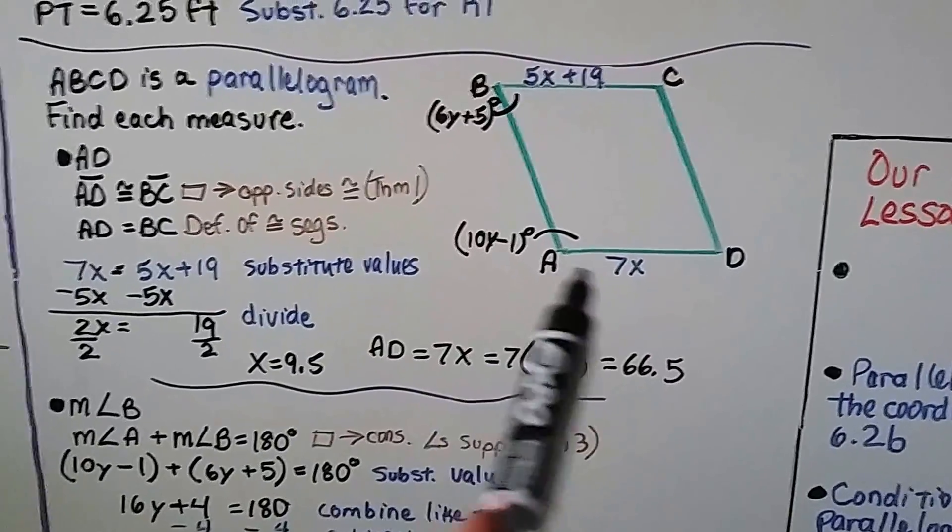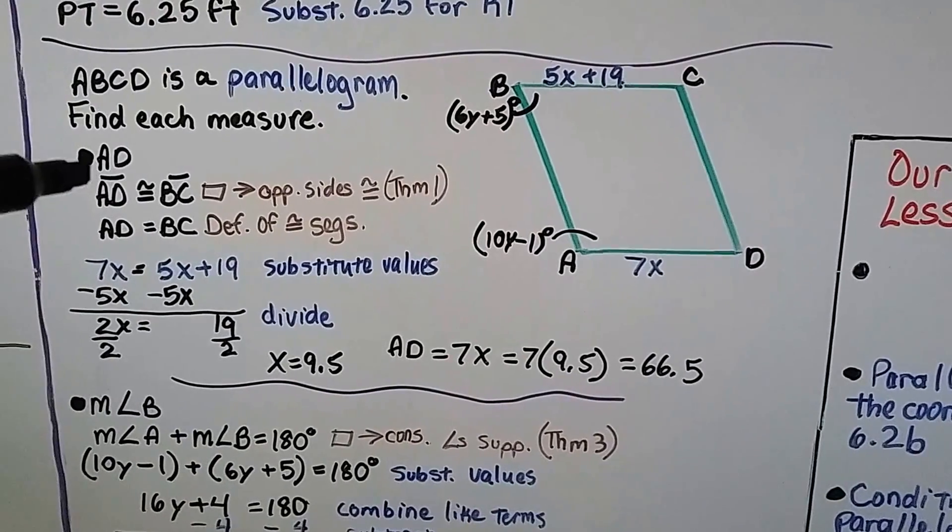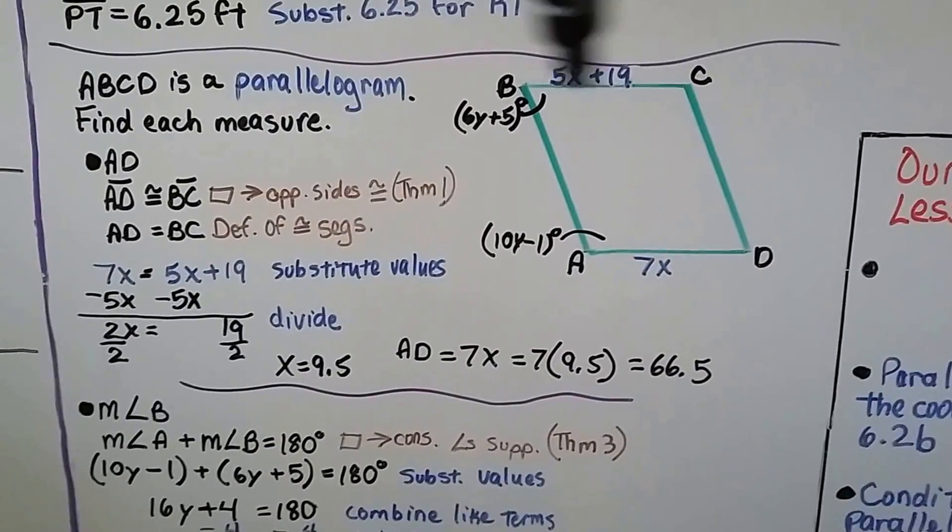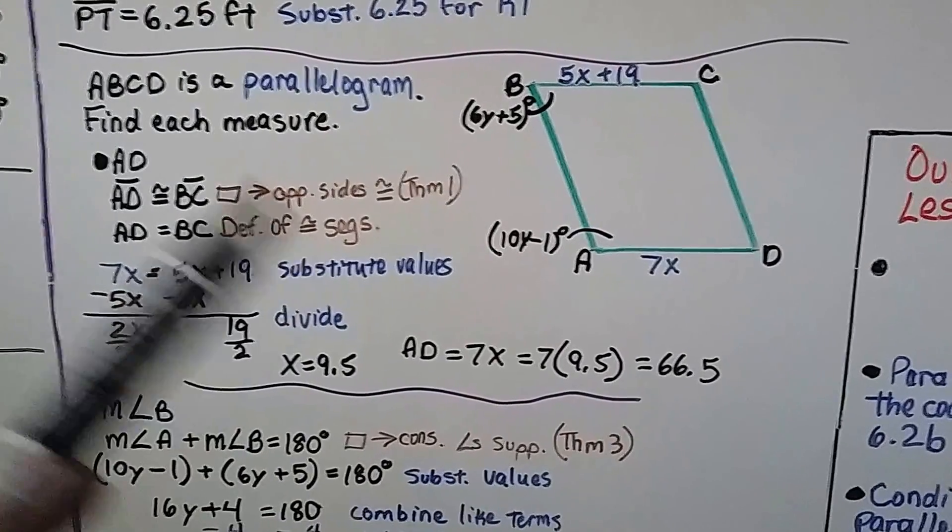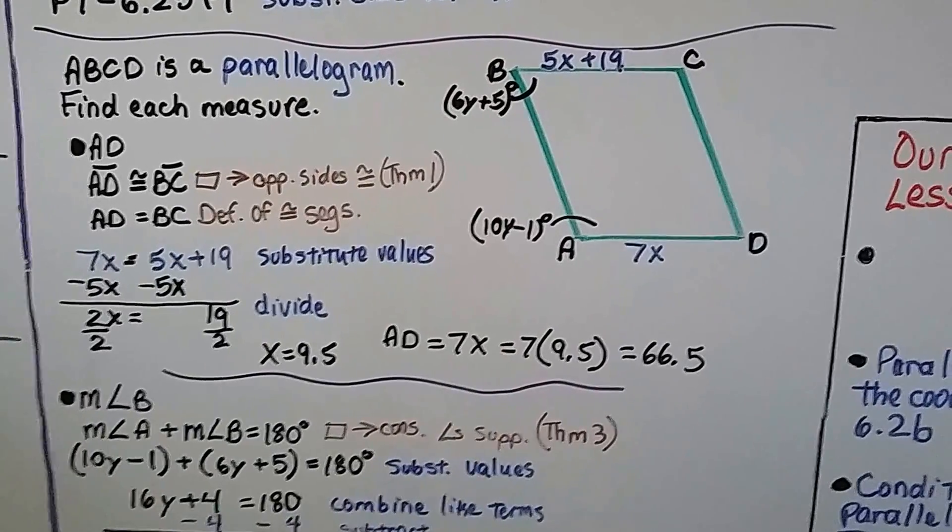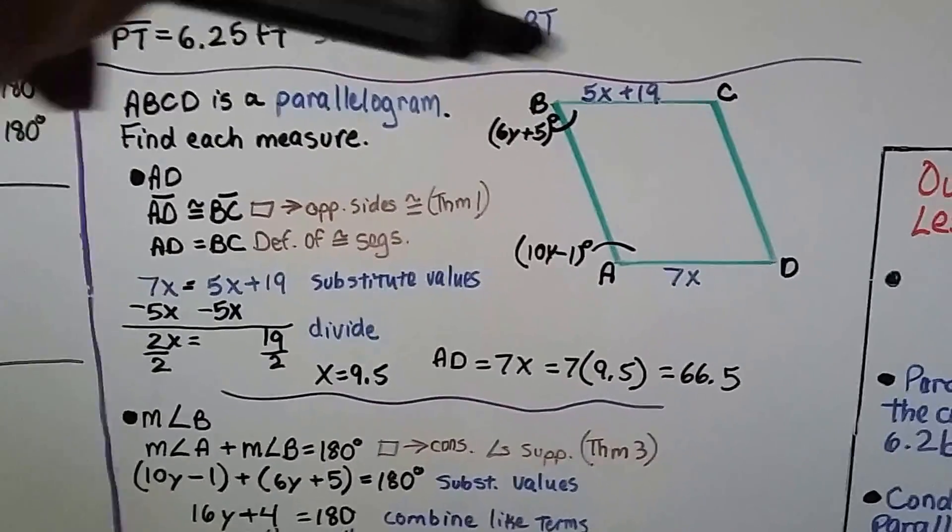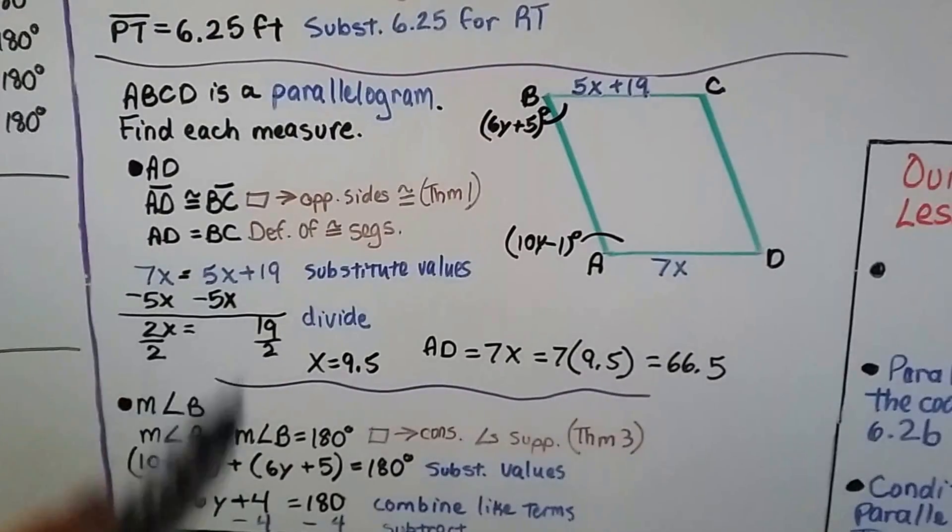We want to find this 7x, this AD. We know AD is congruent to BC. These two are congruent. The opposite sides are congruent from theorem 1. If they're congruent, they're equal. That's the definition of congruent segments. And we can write an equation where they're set equal to each other. So we have 7x equals 5x plus 19.